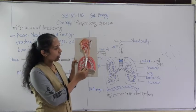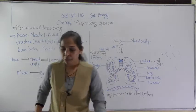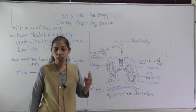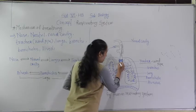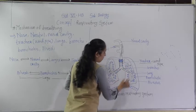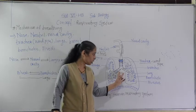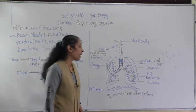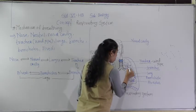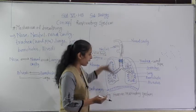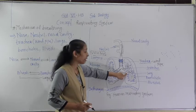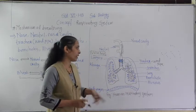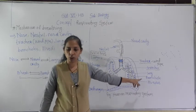We can see that the trachea is getting branched. It has two branches which are called bronchi — singularly called bronchus. These bronchi enter into the lungs and again get further divided into many small, thin branches which are called bronchioles.